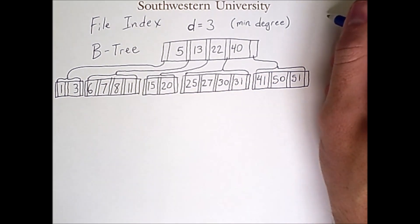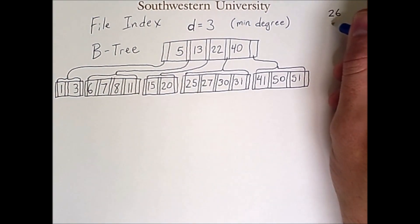Specifically, we're going to add the sequence of values, or keys, 26, 28, 2, 10, and 9.